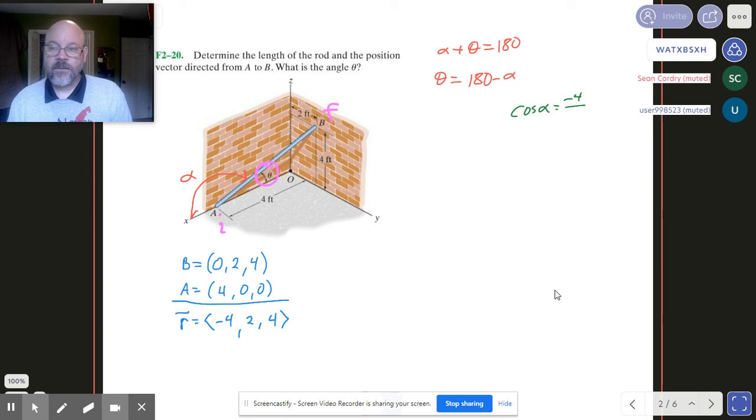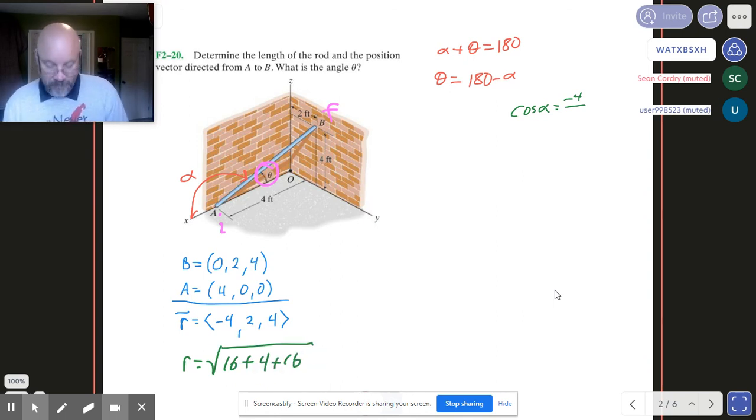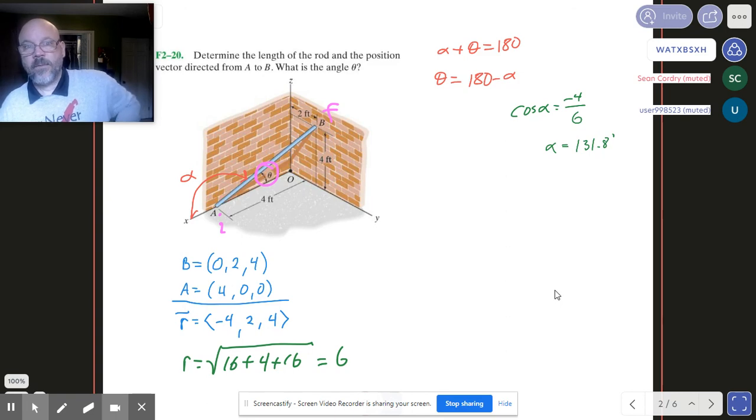So cosine of alpha is going to just be that X component, which is negative 4, over our magnitude. Uh-oh. We got to go back and grab the magnitude. Forgot about that. So our magnitude, we're looking at 16 plus 4 plus 16. And if you run that on your calculator, that turns out to be 6. 16 and 16 is 32 plus 4 is 36, square root of that is 6, right? It all pans out, checks out. So anyway, back to cosine alpha. We got negative 4 over 6. And so alpha turns out to be 131.8 degrees. And so now that we know that, I'll let you subtract it yourself there. And you can figure out what the angle of theta is. So direction cosines are not so crazy or useless after all.